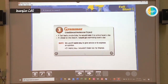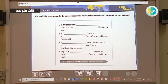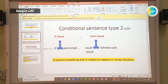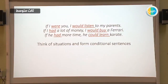Now let's move to the tasks. I want you to think of a situation that is unlikely to happen or an unreal situation, and try to form your own sentences. Use conditional sentence type 2. Let's see some examples: 'If I were you, I would listen to my parents.' 'If I had a lot of money, I would buy a Ferrari.' 'If he had more time, he could learn karate.' In all the 'if' clauses, we used past simple verbs, while in the main clauses we use 'would' or 'could' plus the verb in the infinitive form.